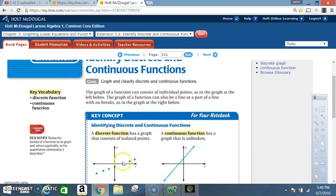Here is a discrete graph, and here is a continuous graph. Key concept: a discrete function has a graph that consists of isolated points. A continuous function has a graph that is unbroken. So here the line is solid, and here the graph is made up of individual points.